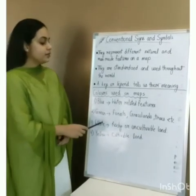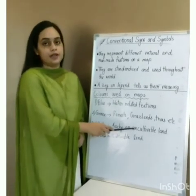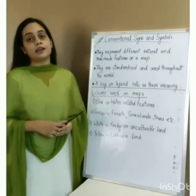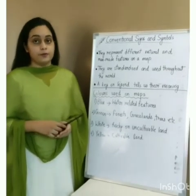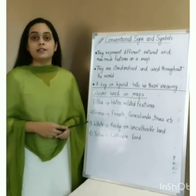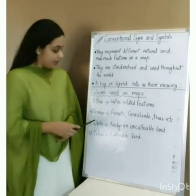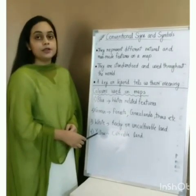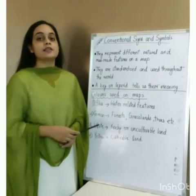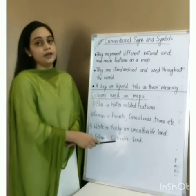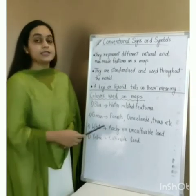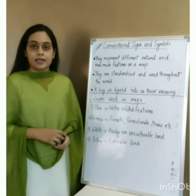White colour shows rocky or uncultivable land — land on which agriculture is not possible because it is either rocky or has infertile soil. The last colour is yellow, which represents cultivable land where agriculture is possible, meaning the land is covered with fertile soil.